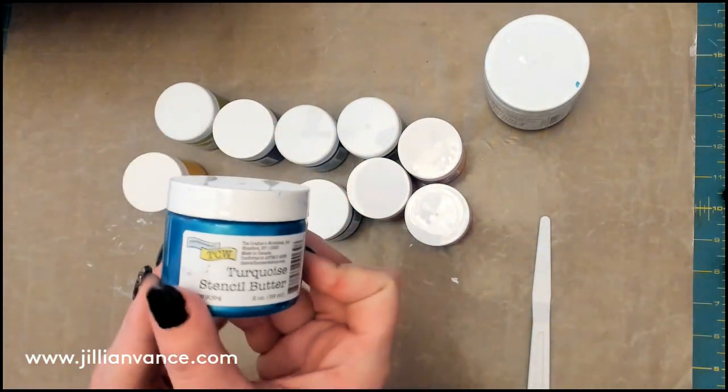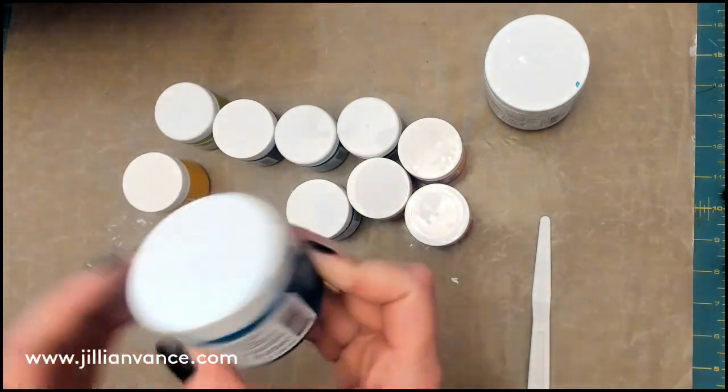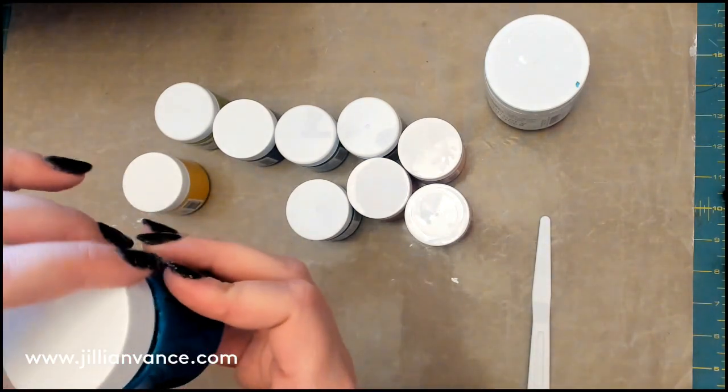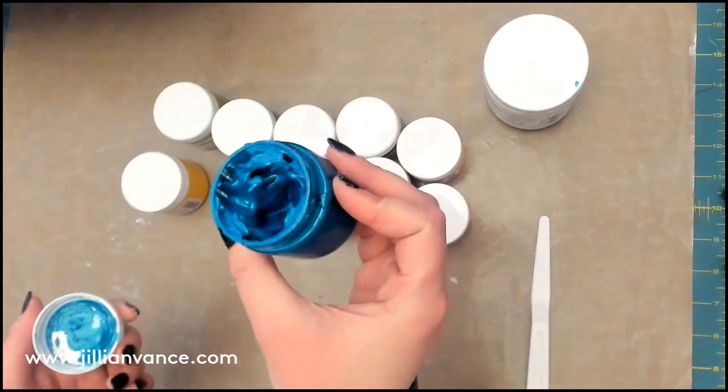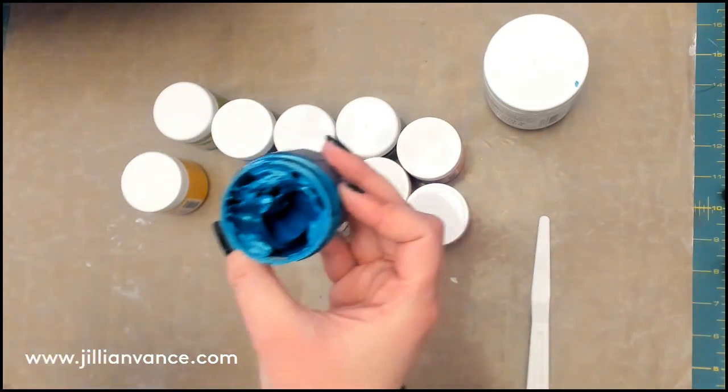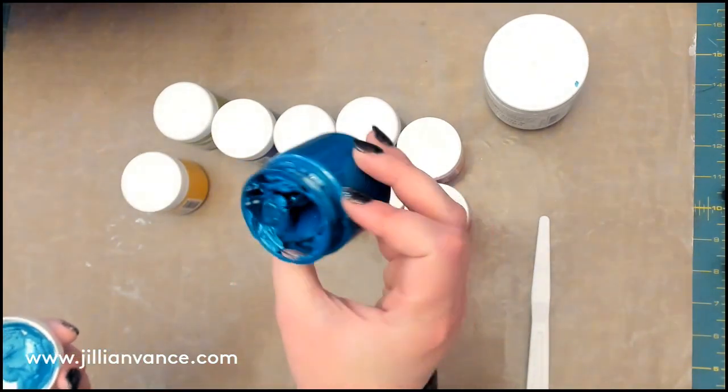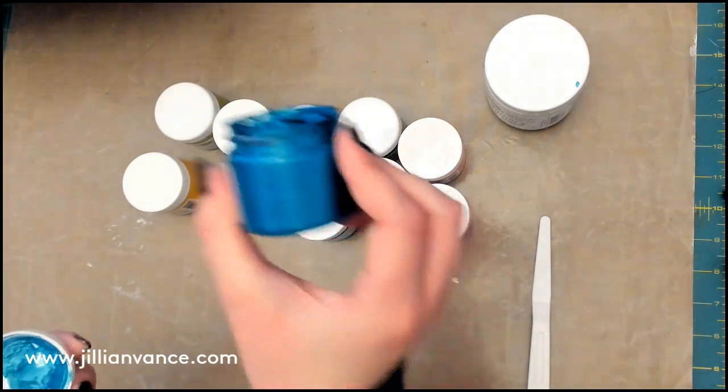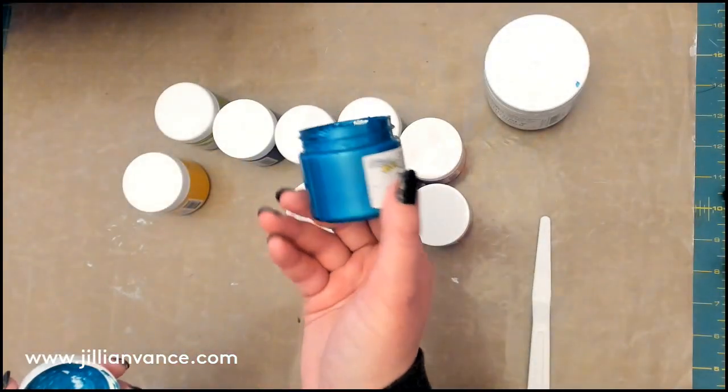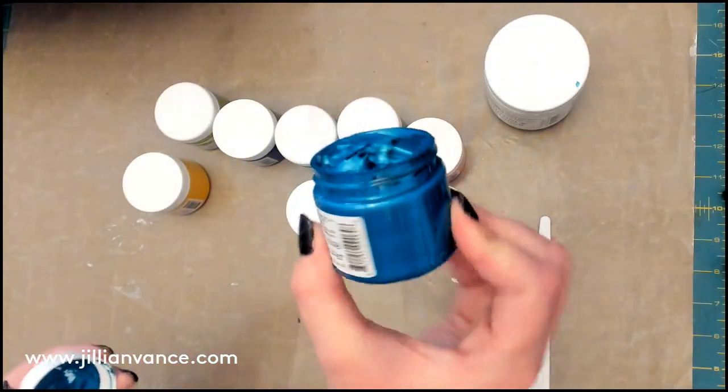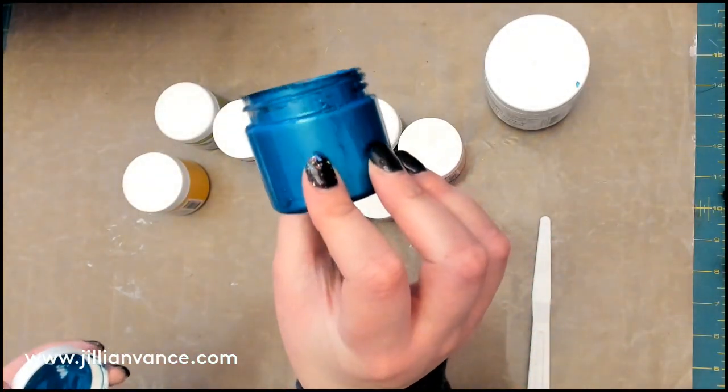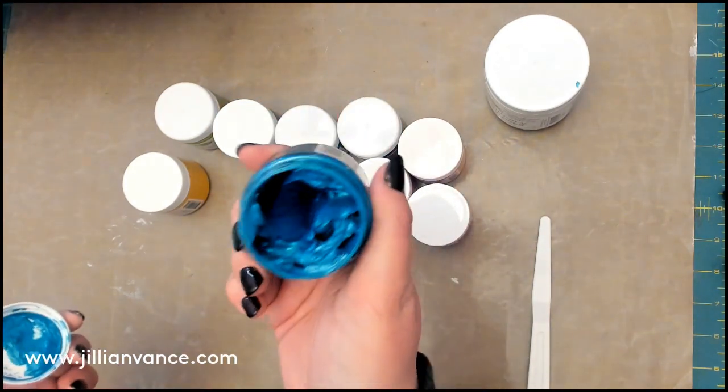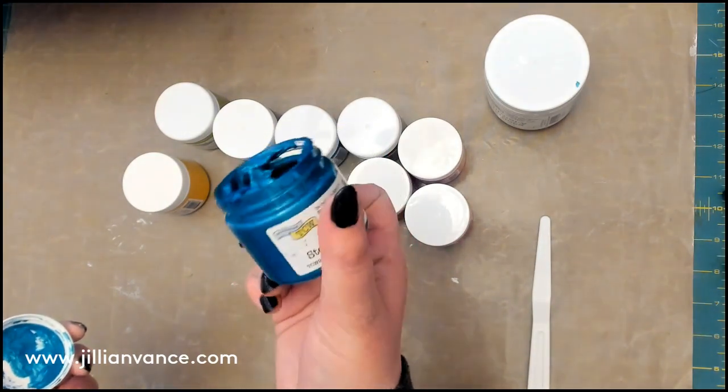Next up, we have turquoise. It is a very gorgeous color. All of these are very true to color in the jar and on your projects, so they are all gorgeous. This is coming off a bit more blue on camera, but it is green, greeny blue. You guys know what turquoise looks like. It's a very gorgeous color.